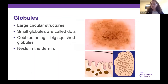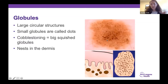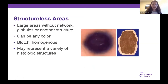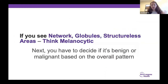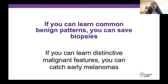Globules are just circular structures — histologically they represent nests of melanocytes in the dermis. Circles look like circles. When they're very large, like in a big congenital nevus, that's called cobblestoning. Congenital nevi have big nests of melanocytes in the dermis, so we see these big circles. Finally, structureless areas are any large area that doesn't have network, globules, or other structure — like a blue nevus. Some call this blotch or homogenous area. If you see any of those three things, think melanocytic.